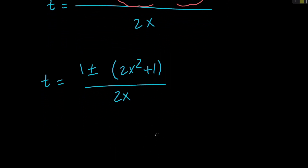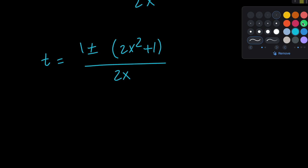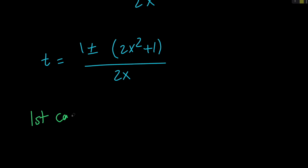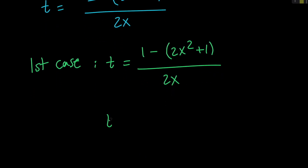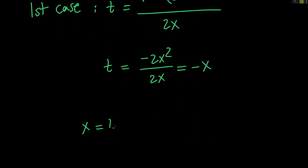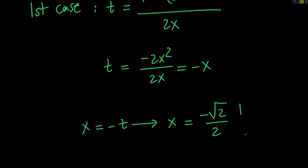This means that we have two cases for the value of t. In the first case, t equals 1 minus the quantity (2x squared plus 1), all divided by 2x, which means that t is going to equal negative 2x squared over 2x, which simplifies to negative x. So x is equal to negative t. And since t is √2/2, we can say that x is equal to negative √2/2. So this is our first and only real solution of our equation.